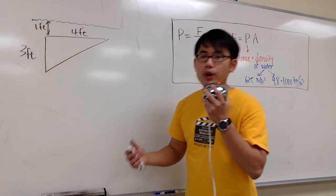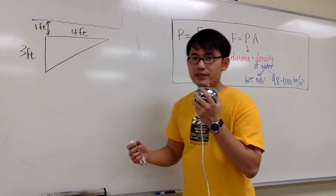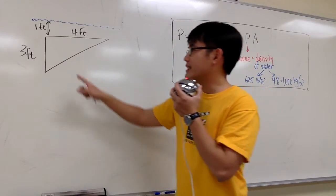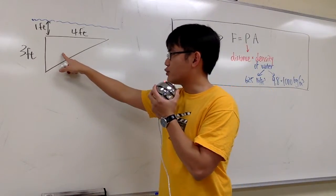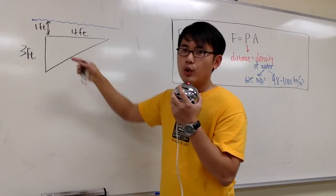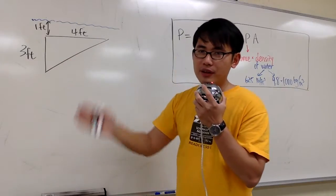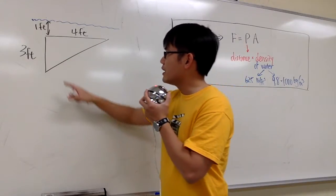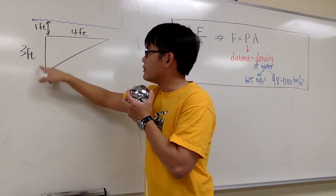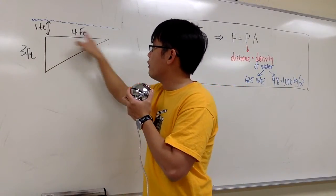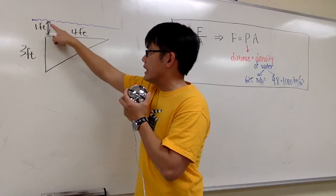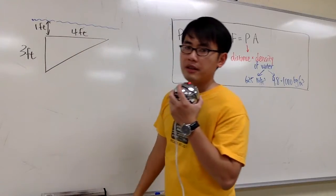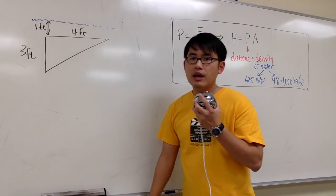In this question, we are going to figure out the hydrostatic force acting on a triangular plate when we put it vertically into the water. We have dimensions of 3 feet, 4 feet, and it is 1 foot underneath the water.